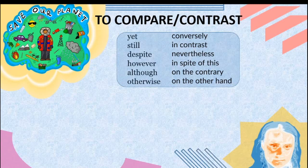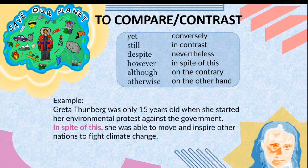Additional compare/contrast transitions include: despite this, on the contrary, on the other hand. Example: Greta Thunberg was only 15 years old when she started her environmental protest against the government. In spite of this, she was able to move and inspire other nations to fight climate change. The transition used here is 'in spite of this,' and the function is to compare and contrast, showing two opposing ideas.